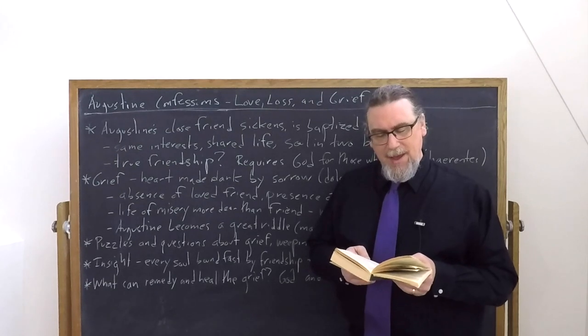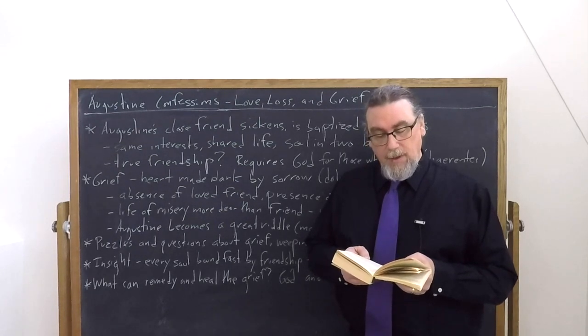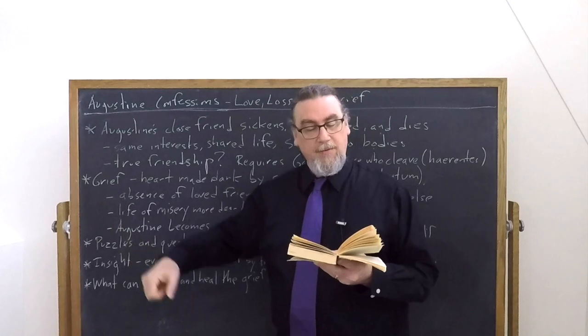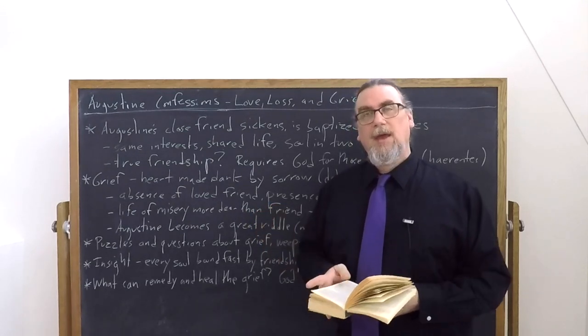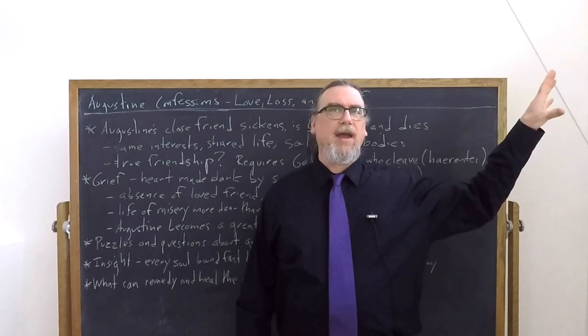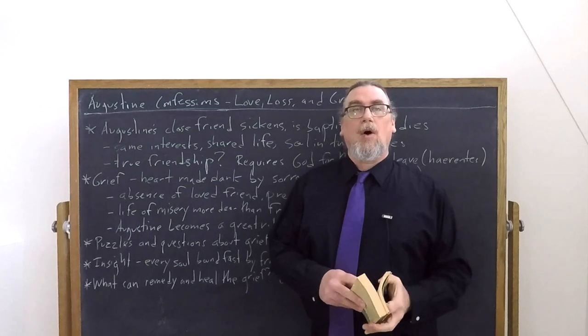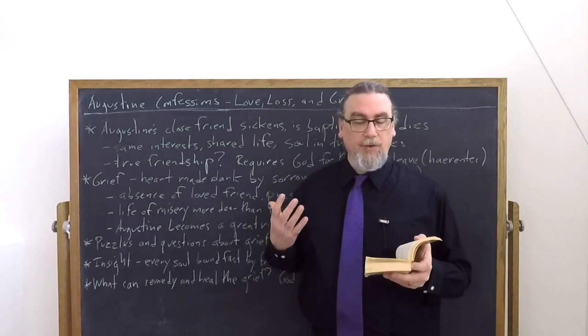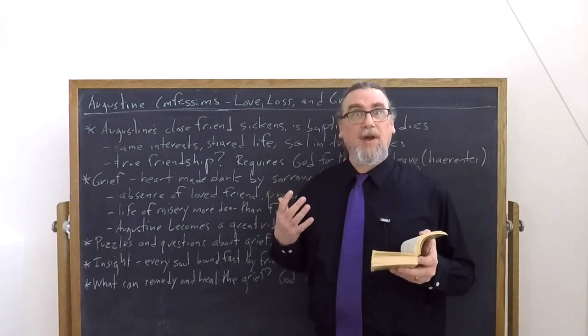So he goes on and he says, only weeping was sweet to me. Why? What's going on with that? And he says, here's some questions. Is it that you, God, although present in all places, have flung away our misery far away from yourself and you abide unchanged in yourself while we spin around in our trials? That's one way of looking at it. God is not bothered by the fact that our close loved ones die. God is unchanging. This is just something that affects us human beings. There are people who hold that sort of view. Augustine goes on and he says, if that was the case, then unless we could weep into your ears, no trace of hope would remain for us. Right? So that's not a helpful way of looking at things. Then he approaches another possibility.